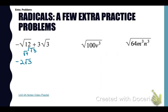Let's work some problems now in your note sheet. We have the negative square root of 12 plus 3 times the square root of 3. You can only add roots if they are exactly the same. So I'm going to simplify the square root of 12 — that simplifies to negative 2 times the square root of 3. Now I can add it to 3 square roots of 3, which gives me positive 1 square root of 3.